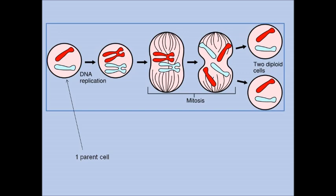Remember you have 46 chromosomes in every single body cell. The first thing that happens is the chromosomes have to replicate, so you end up with X-shaped chromosomes. These then line up along the centre of the cell and the arms of the chromosomes are pulled apart by what we call spindle fibres. The chromosome arms can also be called chromatids, and what you end up with are two genetically identical daughter cells — also called diploid cells because they contain two copies of every chromosome, just like the original parent cell.